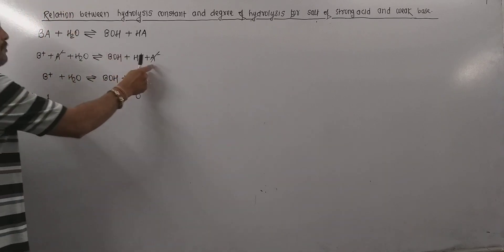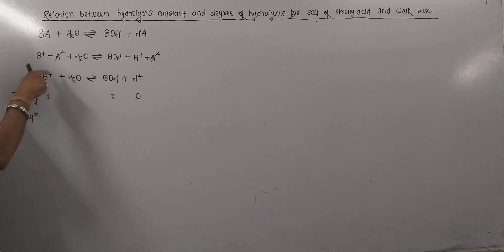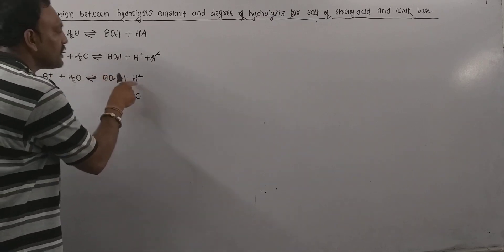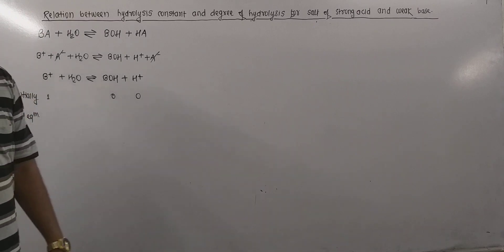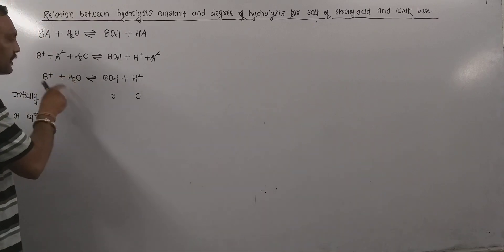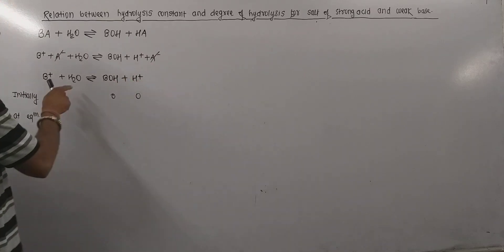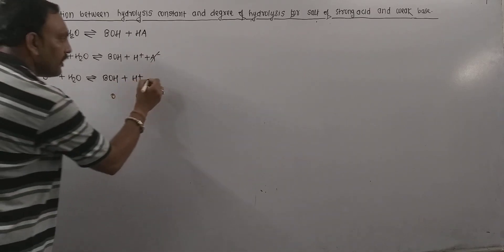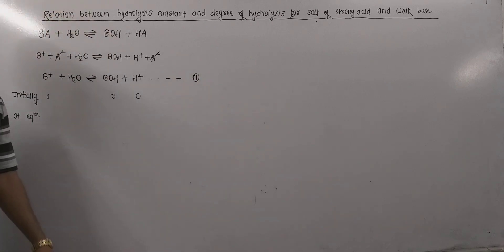Now A⁻ ions are common to both sides so they get cancelled. What remains is: B⁺ + H₂O → BOH + H⁺. So B⁺, one of the ions of the salt, reacts with water producing acidity. This is the hydrolysis reaction — this is equation number 1.